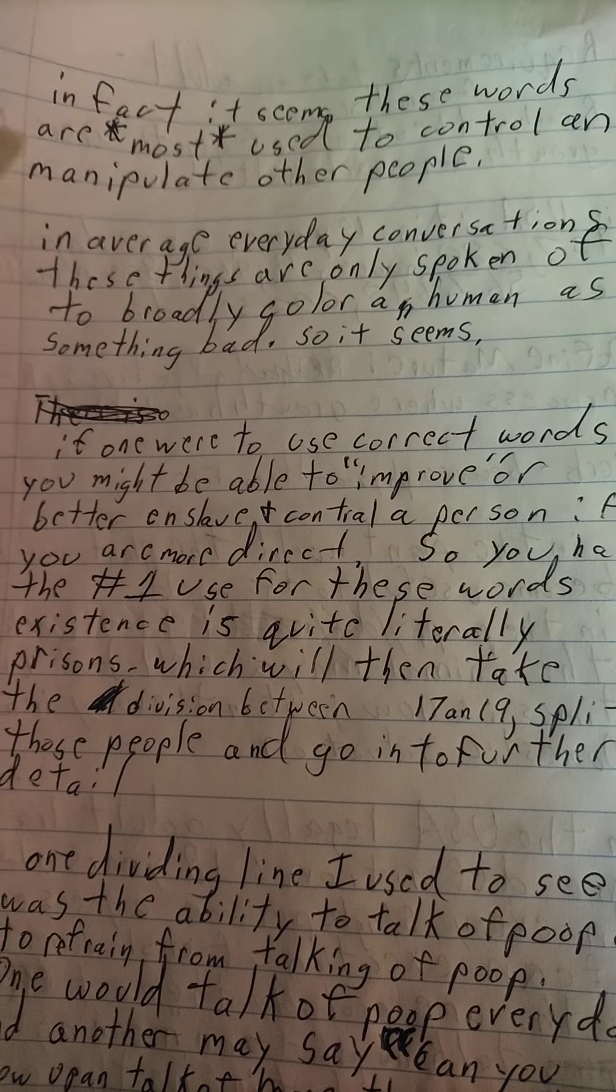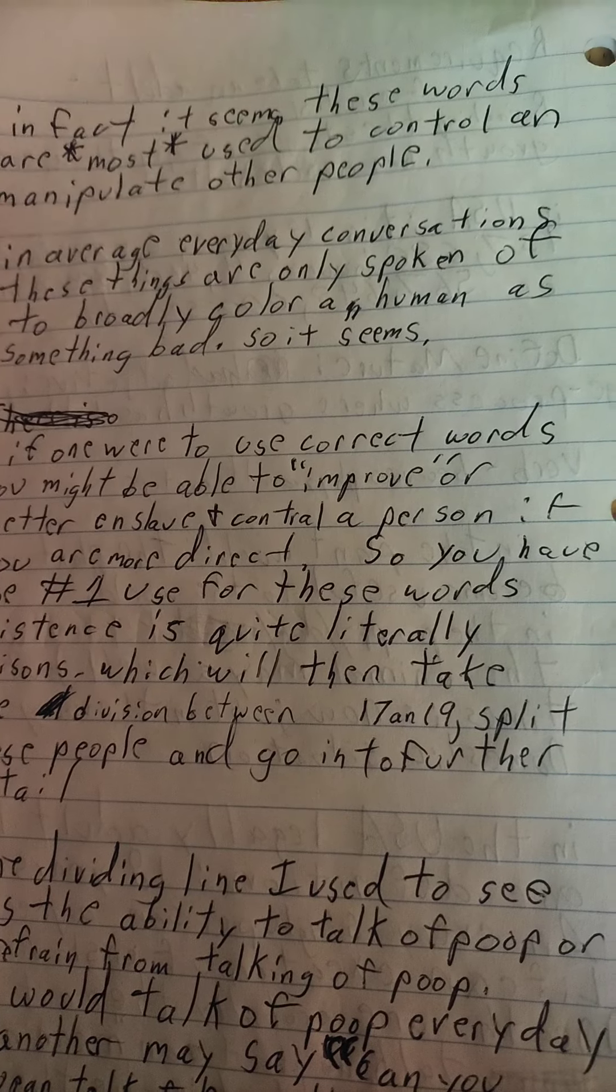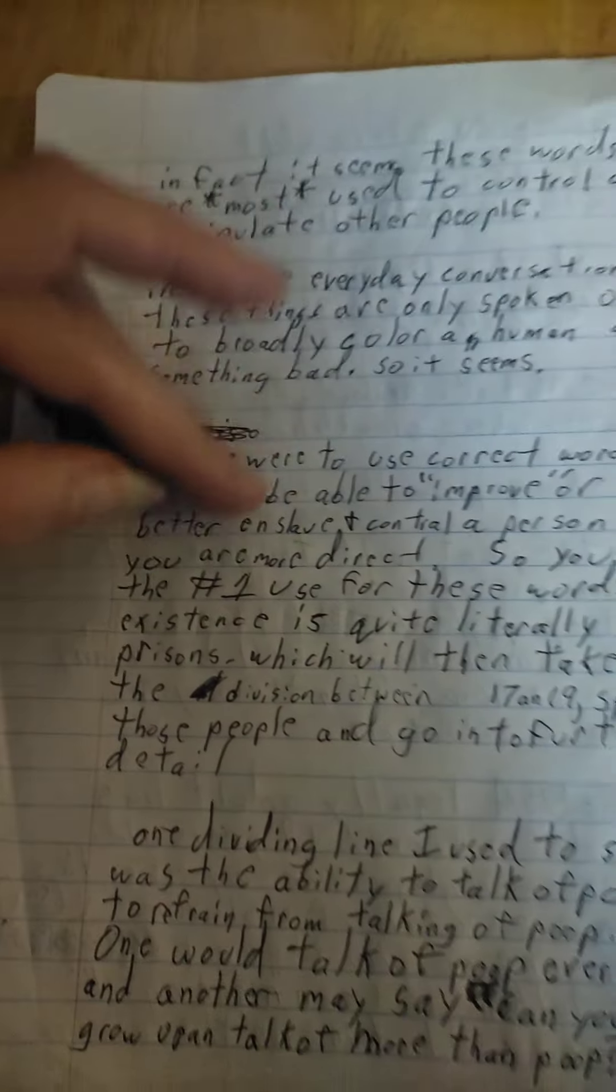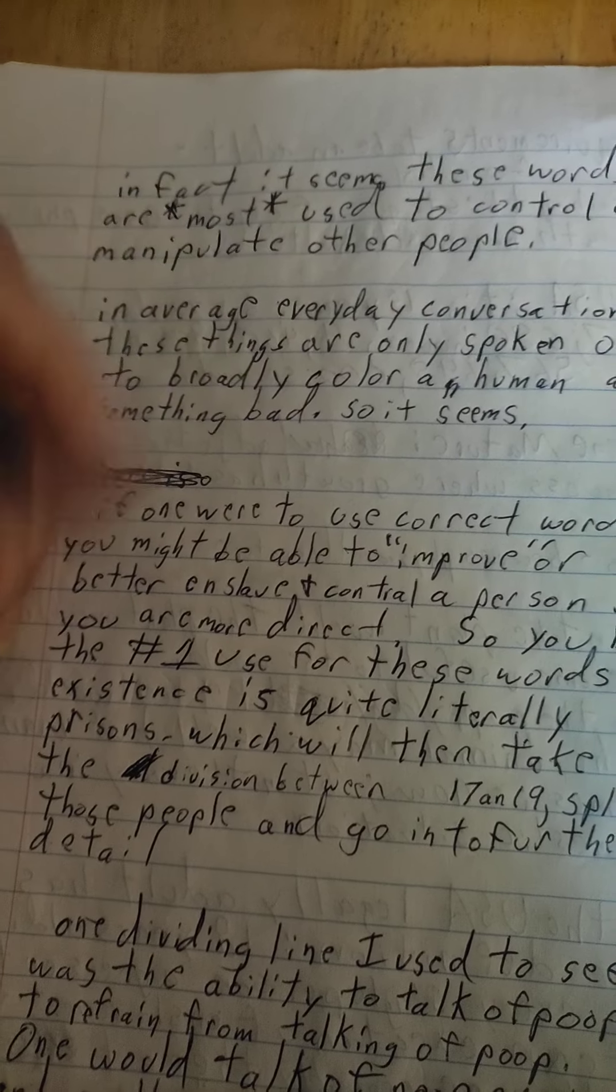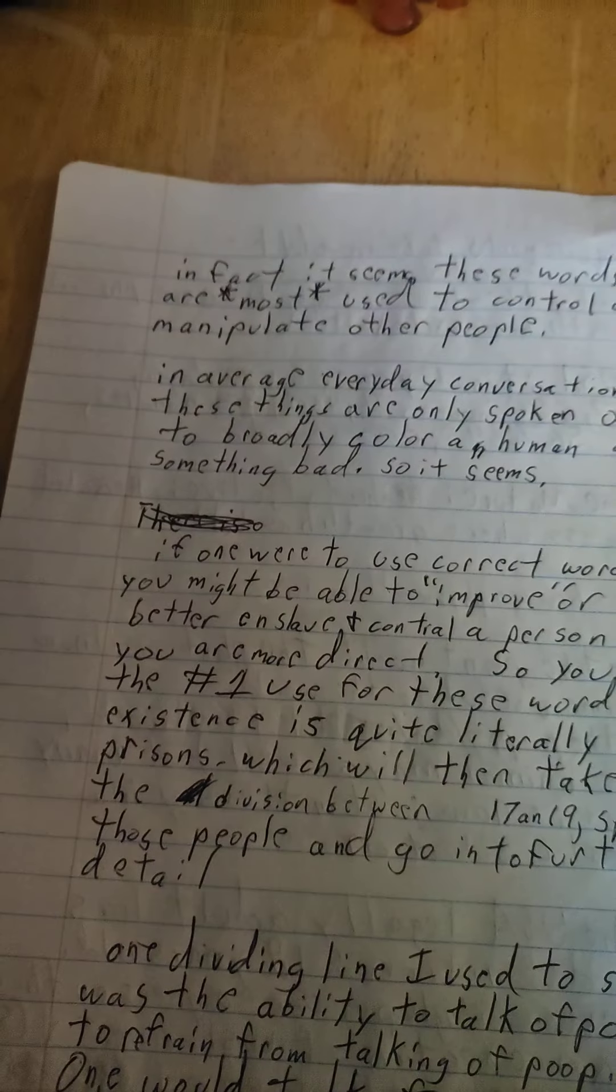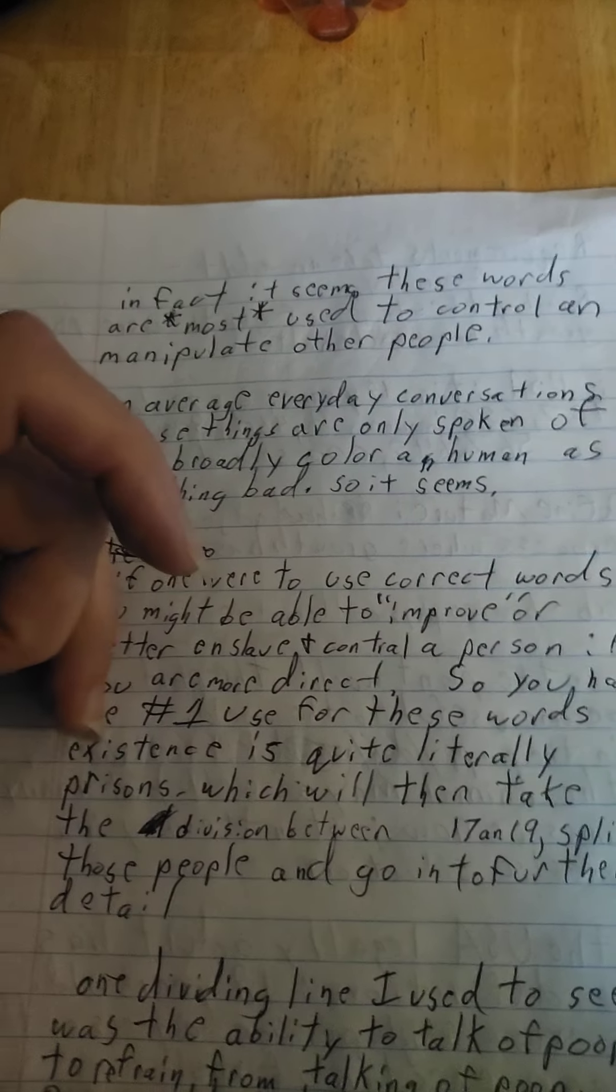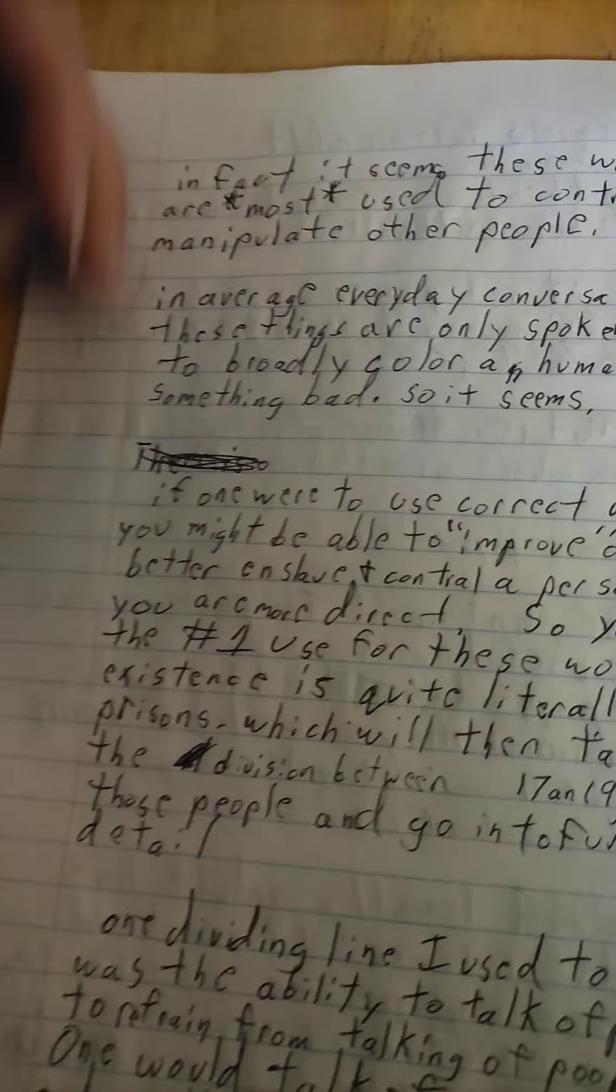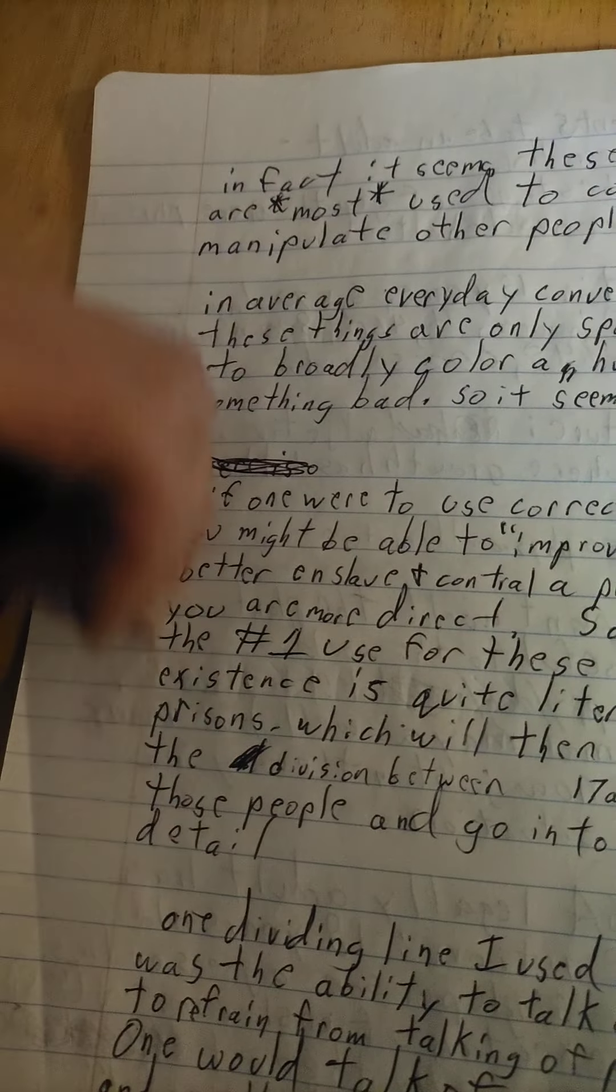Not quite the best word. I could make it even better which would take the division between 17 and 19, split those people and go into further detail. So I'm saying the legal system actually is the one group that does anything more than call people a child or an adult. They actually are some of the few that go into detail.